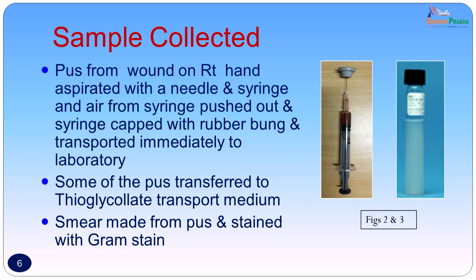A sample was collected to confirm the clinical diagnosis. Pus from the wound on the right hand was aspirated with a needle and syringe; air from the syringe was pushed out, the syringe capped with a rubber bung, and transported to the laboratory immediately. Some of the pus was also transferred into a transport medium — thioglycolate transport medium. Smears were made from the pus and stained with the Gram stain.